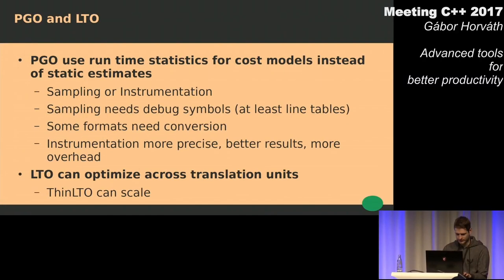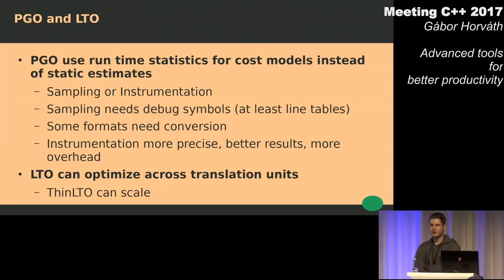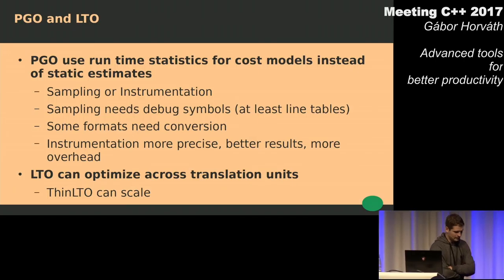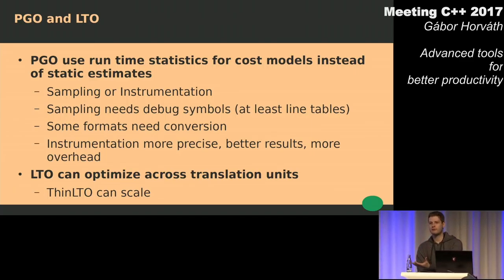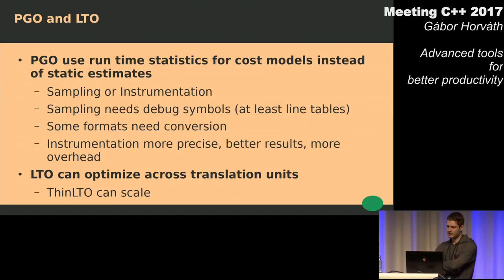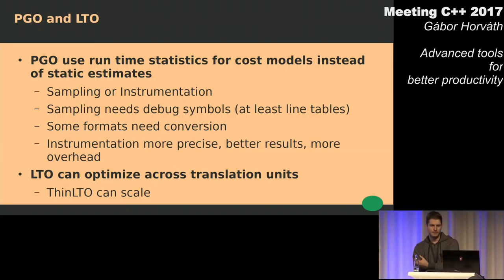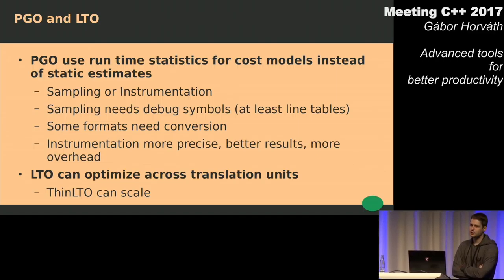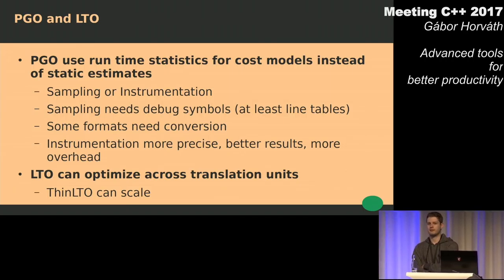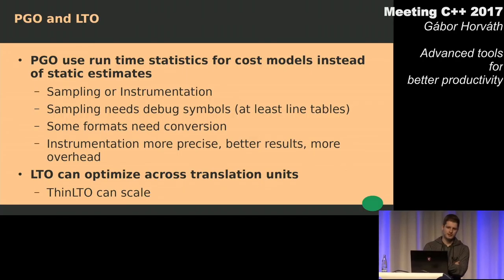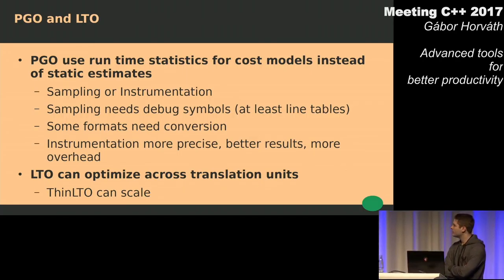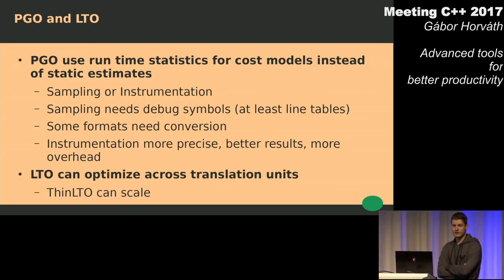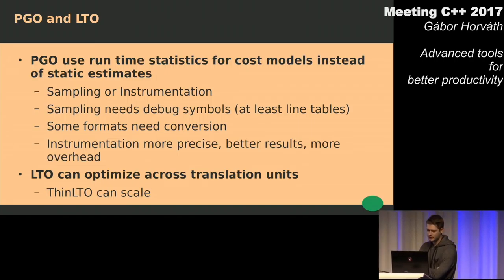PGO is profile-guided optimization. Usually, when you run the compiler, the compiler tries to get some well-educated guess about how frequently a branch is taken or how frequently a loop is executed, and uses this guess for cost models to do transformations that make your code faster. Instead of these guesses, you could provide the compiler with runtime statistics, which will make the compiler ever more precise when they are calculating cost models. So basically, this will mean you will get faster executables, and sometimes the difference can be quite significant. You can either use sampling, which is a lower overhead method to get the statistics, or you can use instrumentation, which has higher overhead but is more precise.